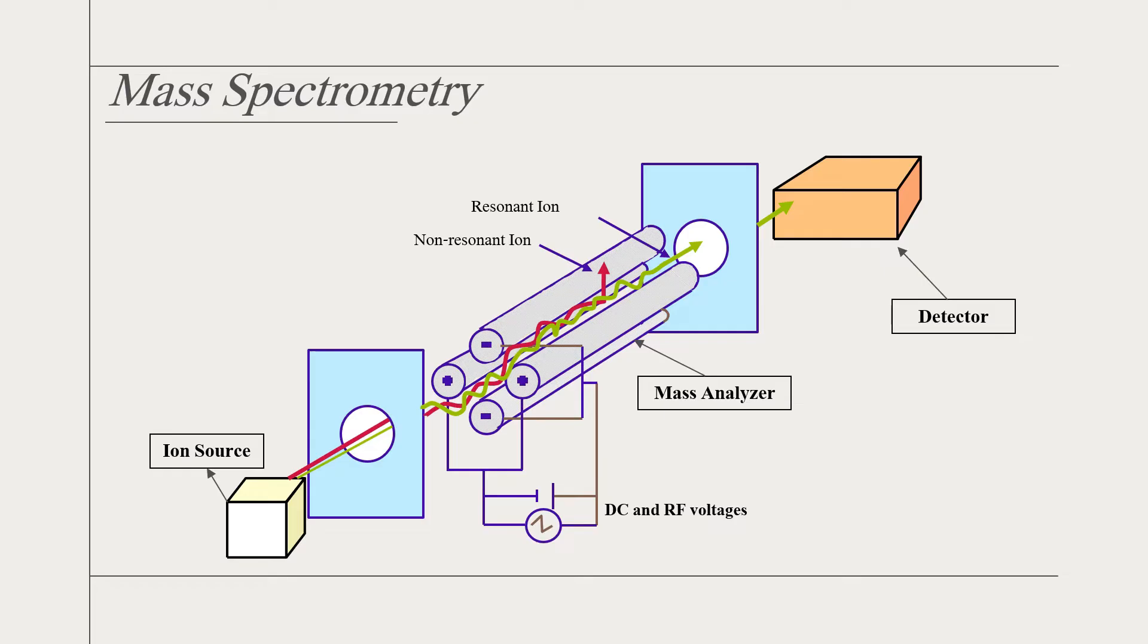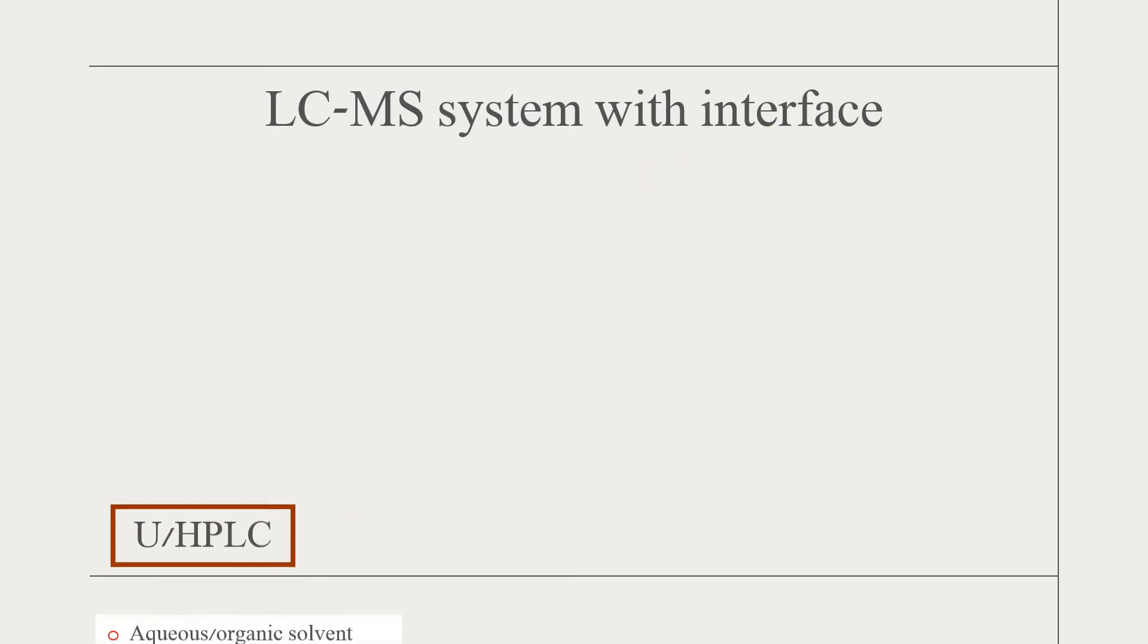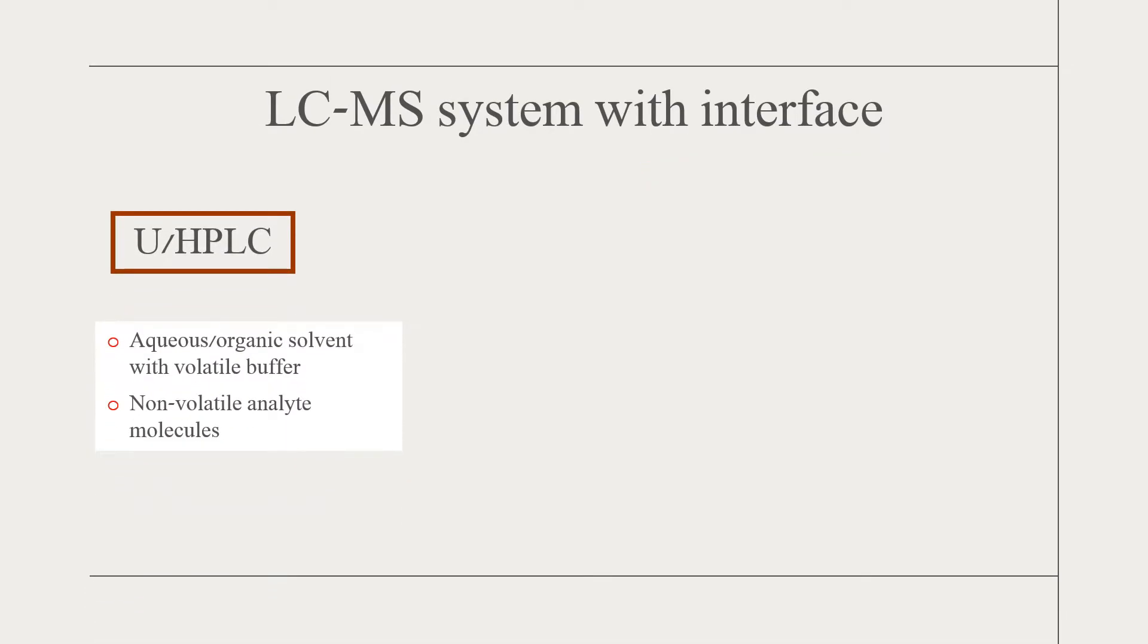It consists of an interface, a mass analyzer, and a detector. Both the mass analyzer and detector work only in high vacuum conditions, but the sample from the connected liquid chromatography is in liquid form. Therefore, an interface is needed to remove the solvent and at the same time to ionize compounds to form ions.